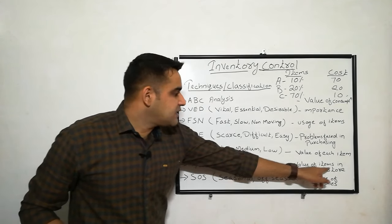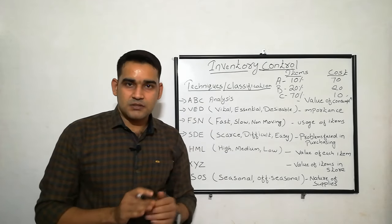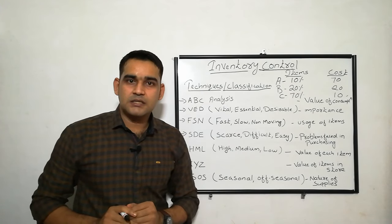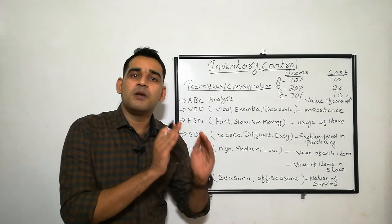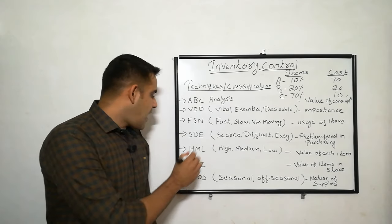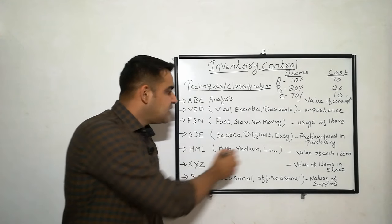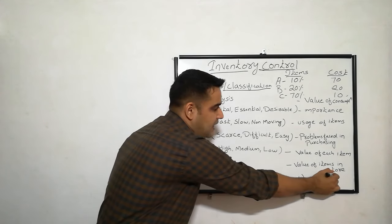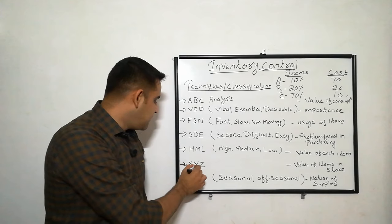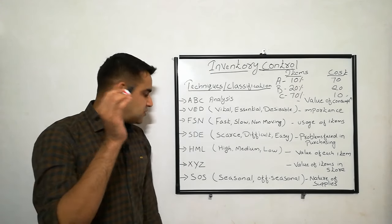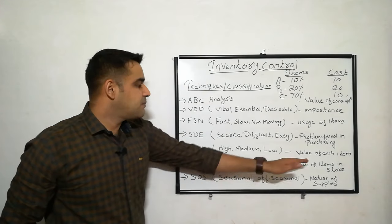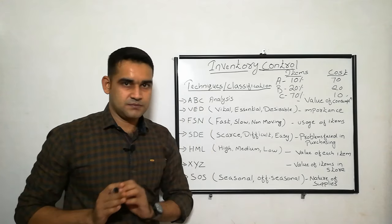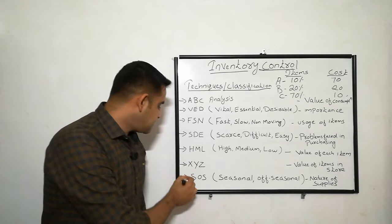Next is XYZ classification. XYZ classification is based on the value of items in the store — in your stock. The price of each item in your stock will be different. The most valuable or high cost items in the store come under X category, medium cost items in stock come under Y category, and low cost items come under Z category. It is based on the value of the item in stock only.